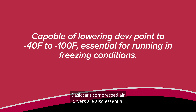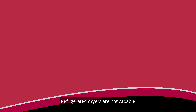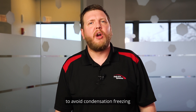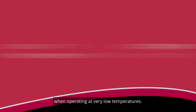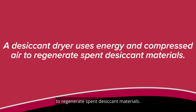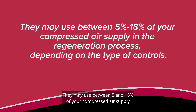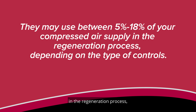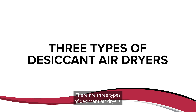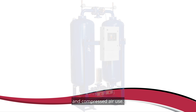Desiccant compressed air dryers are also essential if your applications run in freezing conditions. Refrigerated dryers are not capable of reducing the dew point low enough to avoid condensation freezing when operating at very low temperatures. A desiccant dryer uses energy and compressed air to regenerate spent desiccant materials. They may use between 5 and 18 percent of your compressed air supply in the regeneration process, depending on the type of controls. There are three types of desiccant air dryers which vary in the regeneration methods, energy cost, and compressed air use.